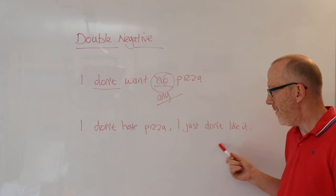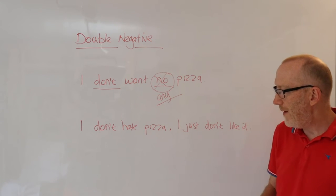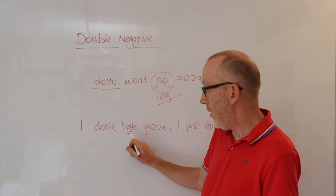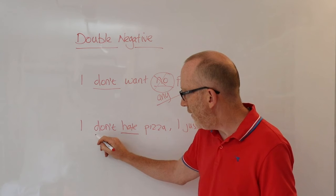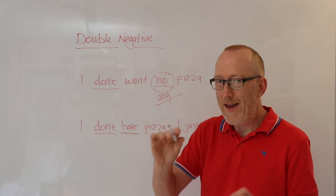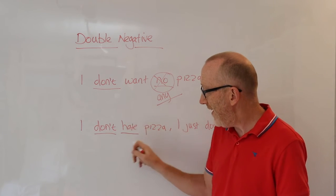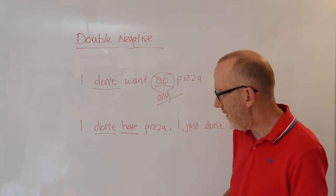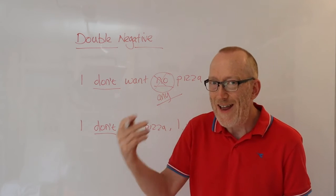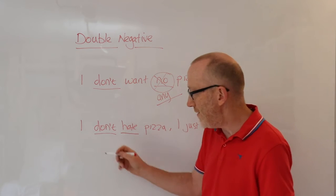Let's take a look at another sentence. I don't hate pizza. I just don't like it. Now hate is obviously a negative word. So I don't, I do not hate pizza. So we kind of have a negative and a negative in a sense. I do not hate pizza. Now this is actually perfectly fine grammatically because we have the negative, but actually hate, although it has a negative meaning, it is a positive from a grammatical point of view word. So that is actually correct.